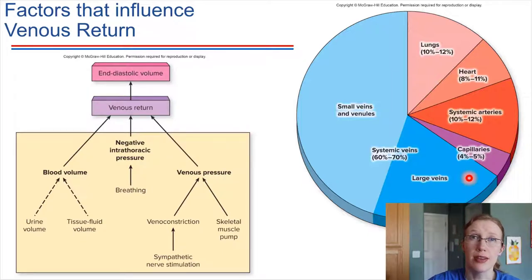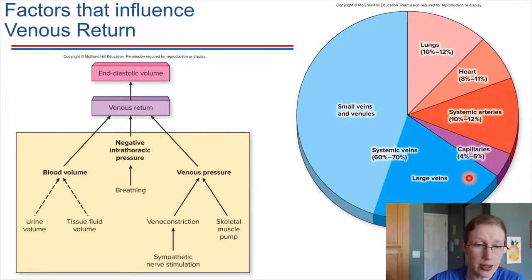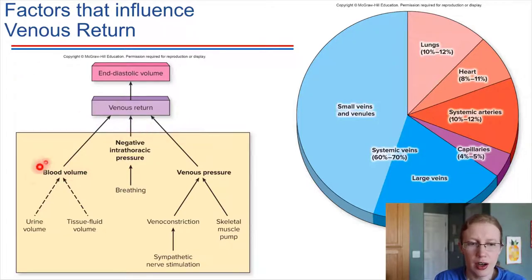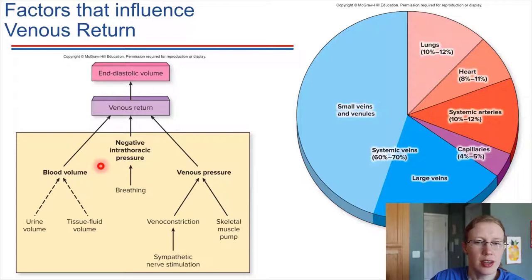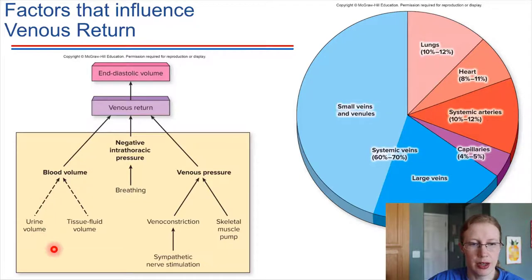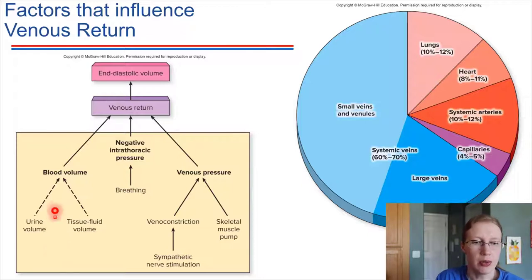Let's look at what influences venous return — the return of blood from the veins into the heart. We've mentioned blood volume. The higher the blood volume, the more venous return will take place. There are a number of things that can influence total blood volume in the body. We'll come back to this when we talk about the kidneys. The kidneys have a major role in maintaining blood volume through the production of urine — depending on how much water is shuttled into urine versus returned to blood, that will influence blood volume.